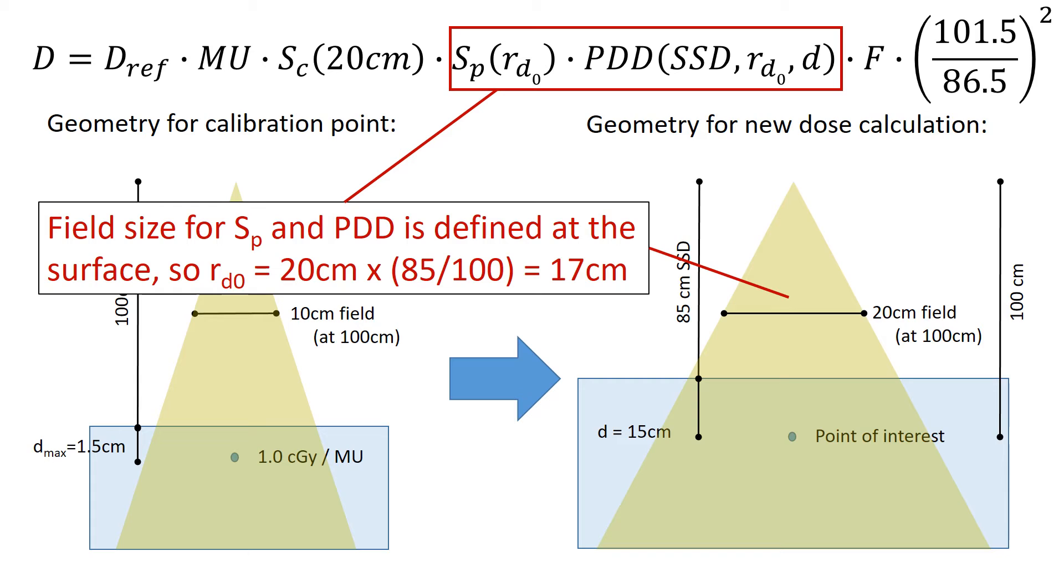And the way we do that is just by using the proportional triangles, basically that distance of 85 versus 100, and you adjust your 20 field size down to what it is actually at the surface, which would make it a 17 cm surface in this case.